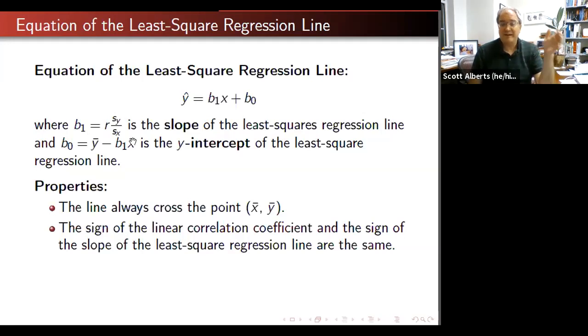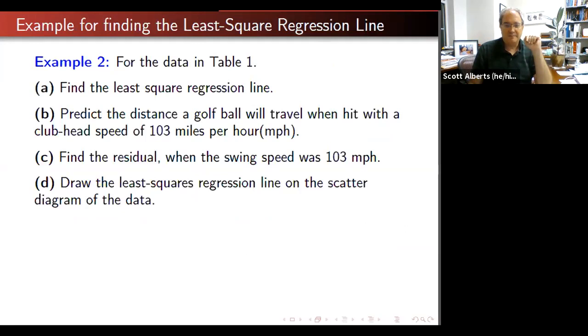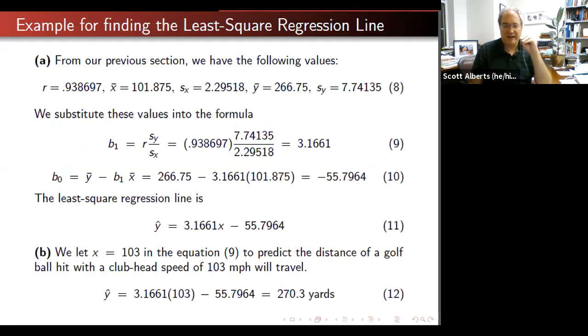Now a couple nice things. The line always crosses the point x bar, y bar. So in fact, if you calculate the slope and use x bar, y bar, you'll get that equation of the line very quickly from that. More interesting is that the correlation coefficient, if it's positive, the slope is going to be positive. If the correlation is negative, the slope is going to be negative. And again, we're going to go ahead and do this with the data that we have.